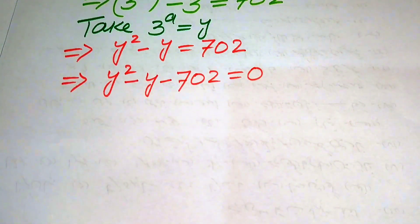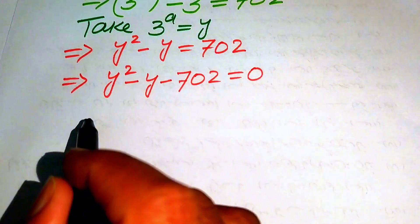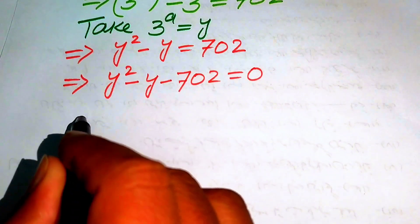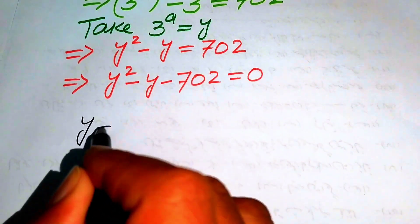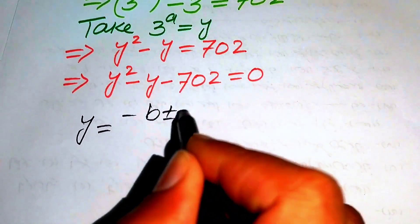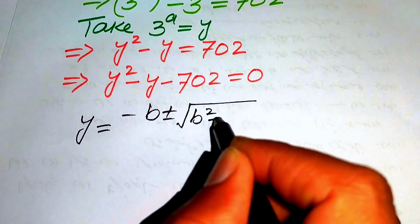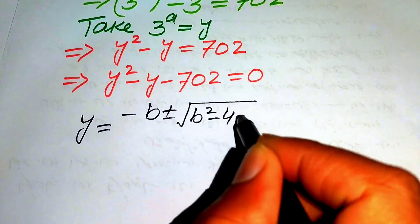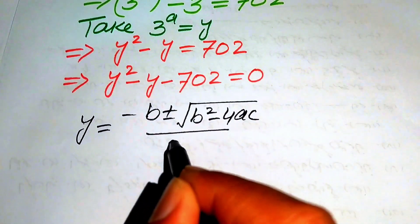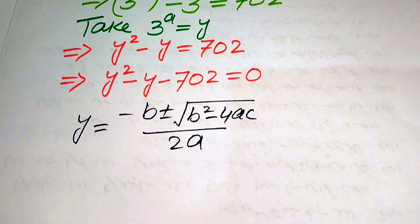We use the quadratic formula to solve this quadratic equation. The quadratic formula is written as y equals to minus b plus or minus square root of b squared minus 4ac, divided by 2a.